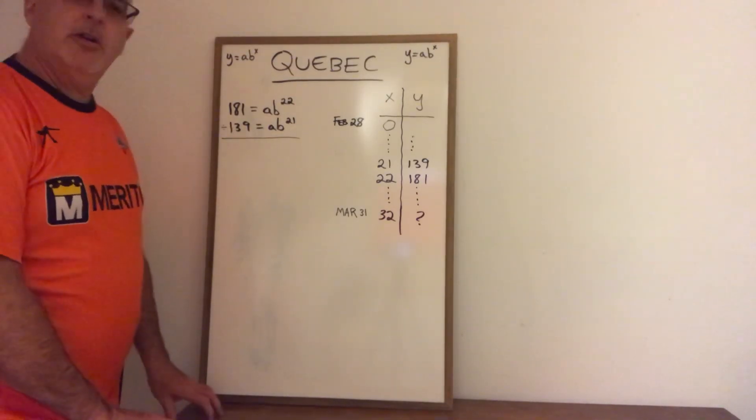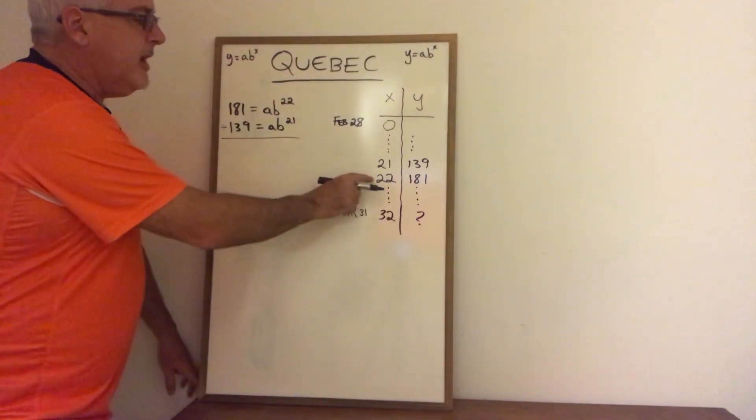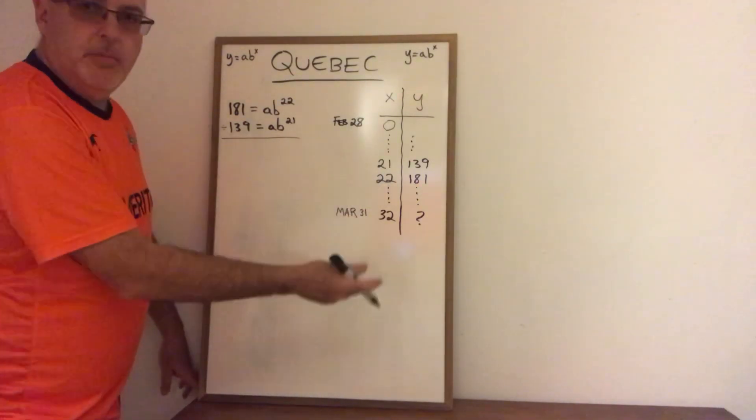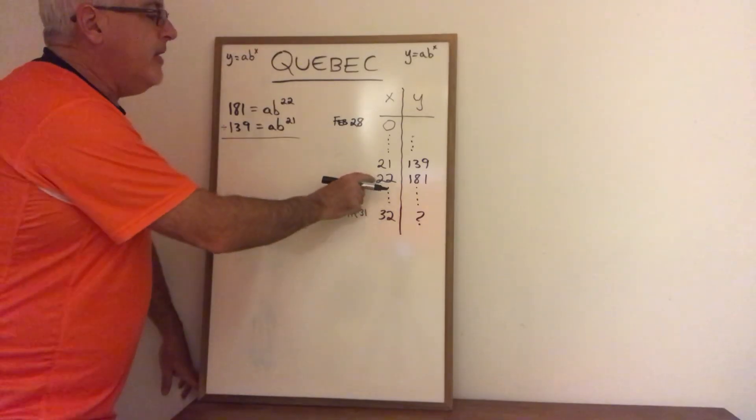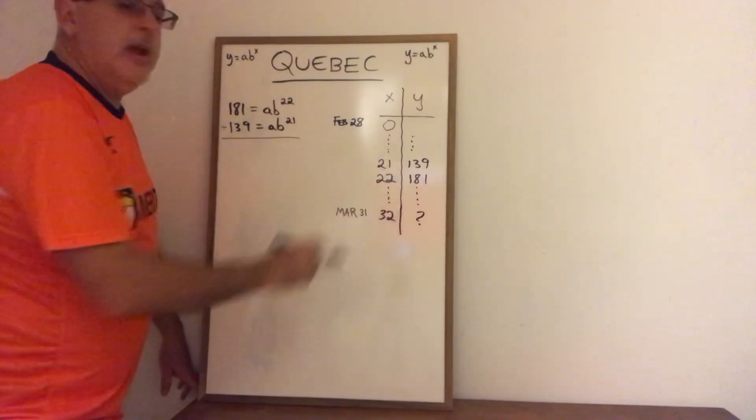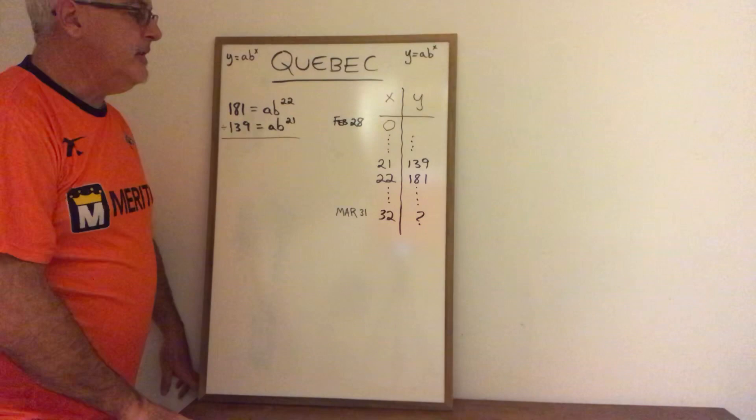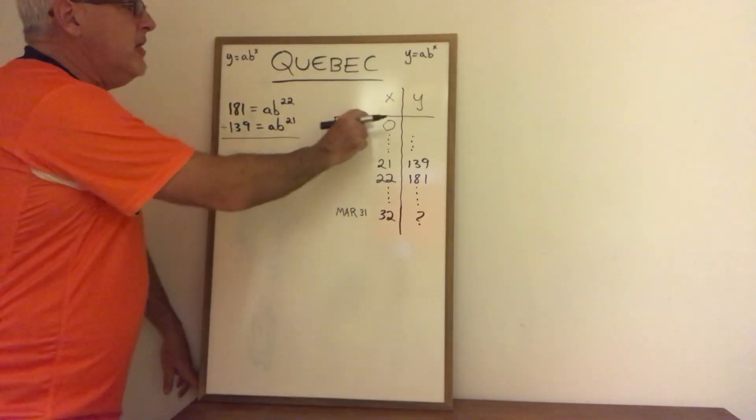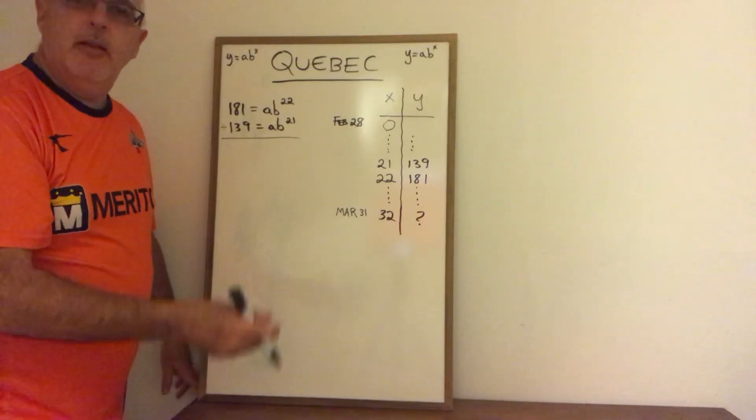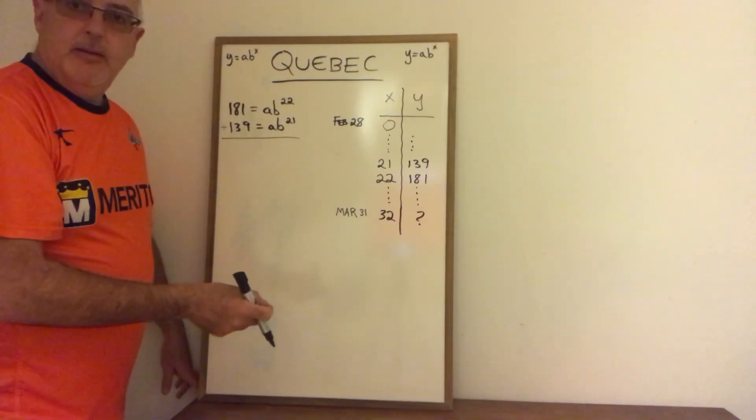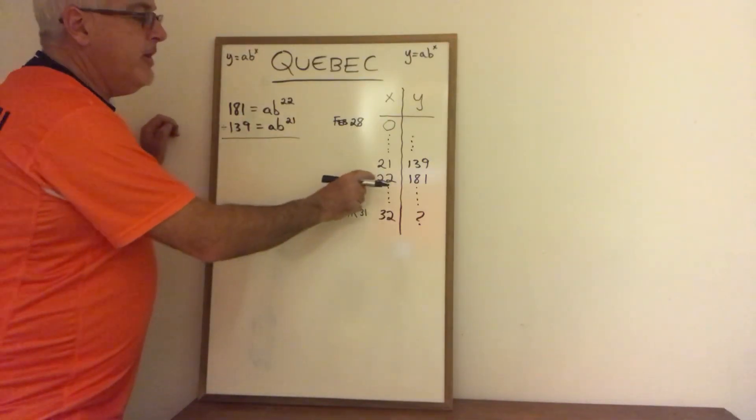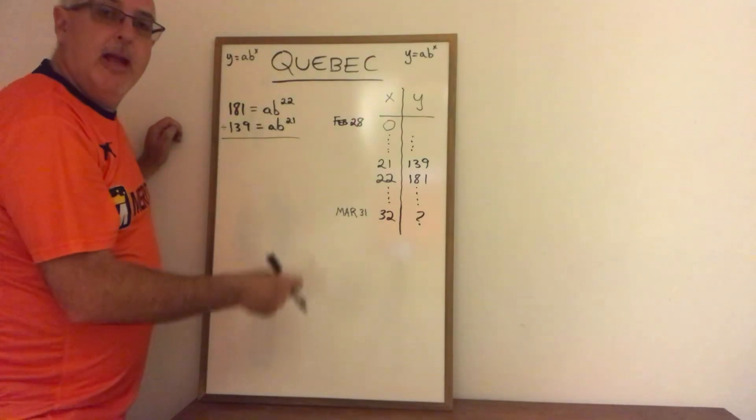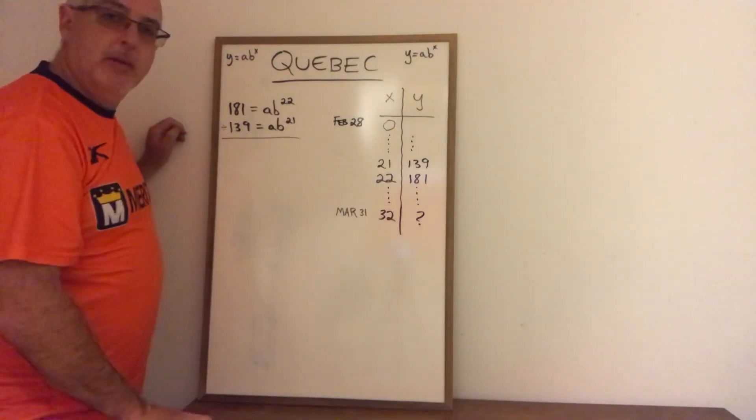Today is March 23rd and yesterday I found from a newspaper article the data that there were 181 confirmed cases in the province and that was day 22. If I count day 0 as the first day that there was a reported case in the province. Therefore the day before was day 21 and there were 139 confirmed cases that day.